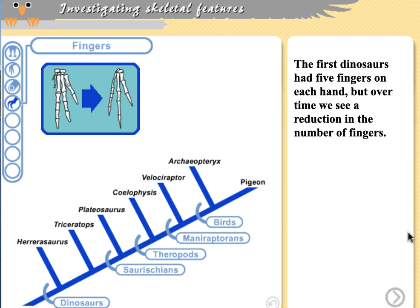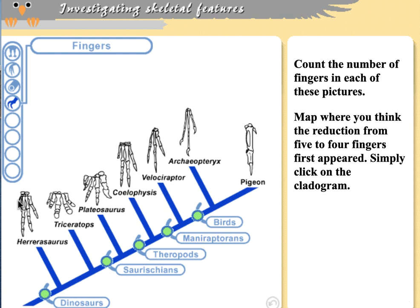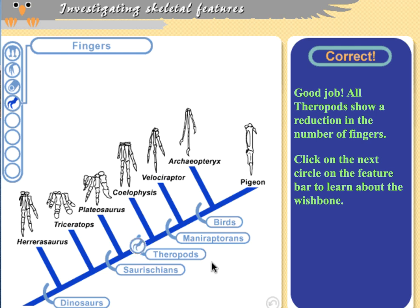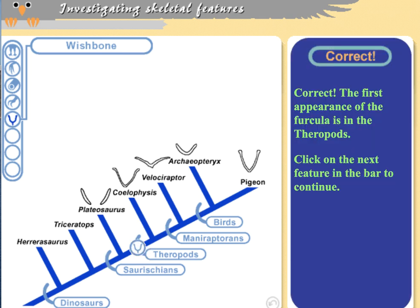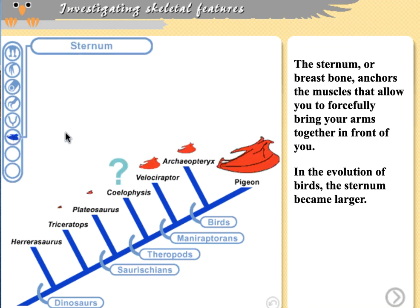Finger reduction is our next characteristic. Originally dinosaurs had five fingers; we see reduction beginning with Coelophysis, so we place reduced digit number with the theropods — recognizing they have both the longer second digit and reduced finger count. The wishbone is another key characteristic for anchoring flight muscles. Plateosaurus has two separate clavicles, but Coelophysis has a wishbone structure, so the wishbone also evolved with the theropods, even though birds don't evolve until much later.